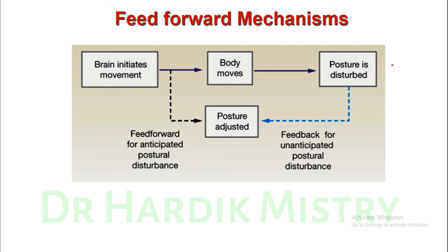The feed-forward mechanism: the brain initiates a movement, which is transferred to the body parts for execution. It is also transmitted to different areas of the brain. If there is a disturbance in the movement, receptors in the muscles sense the defect in normal execution and send the defect signal to different areas of the brain.